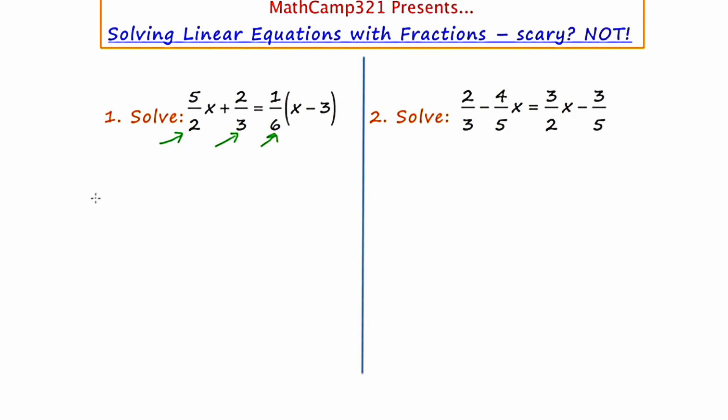Now the LCD, or the least common denominator using the values two, three, and six, would be the number six. So what I'm going to do is multiply both sides of the equation, the right side and the left side, by the number six.